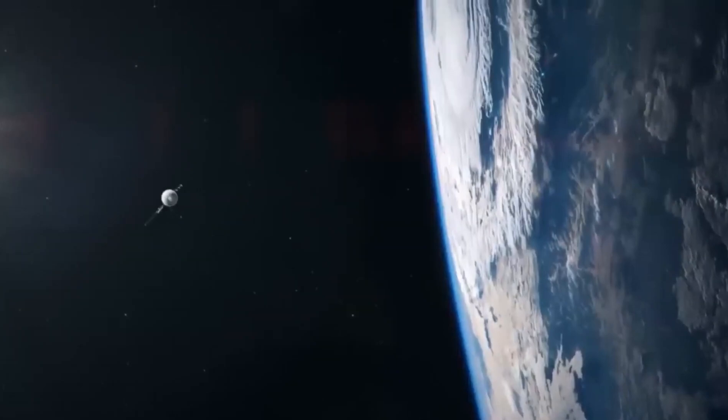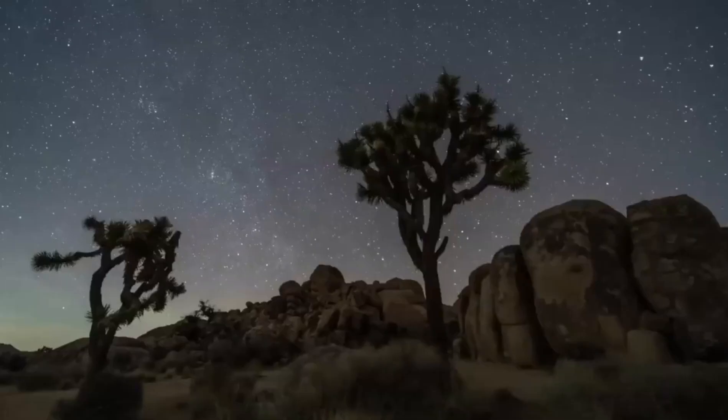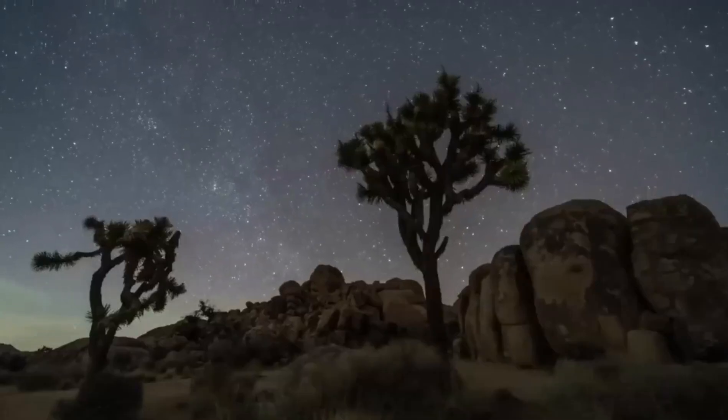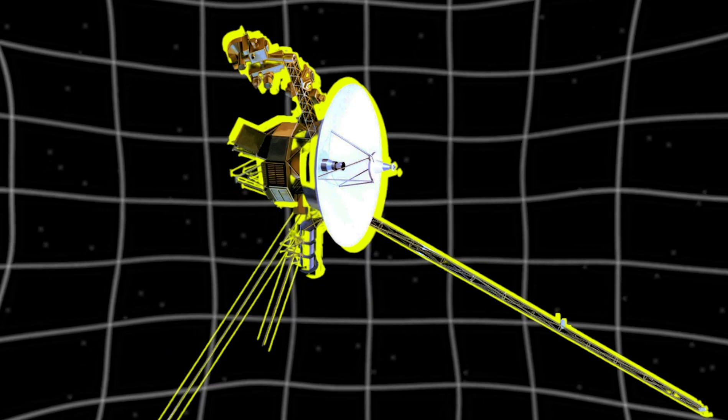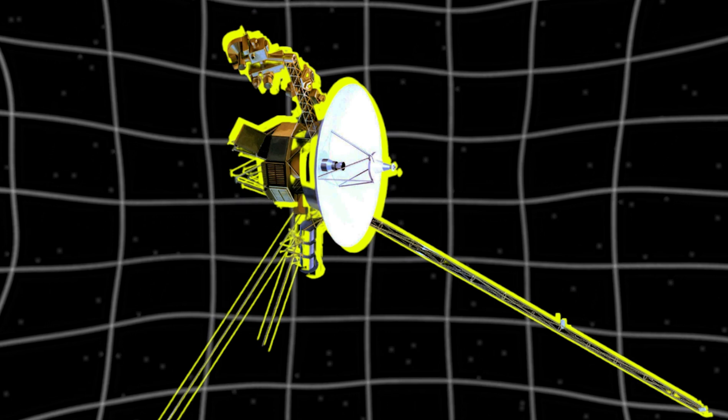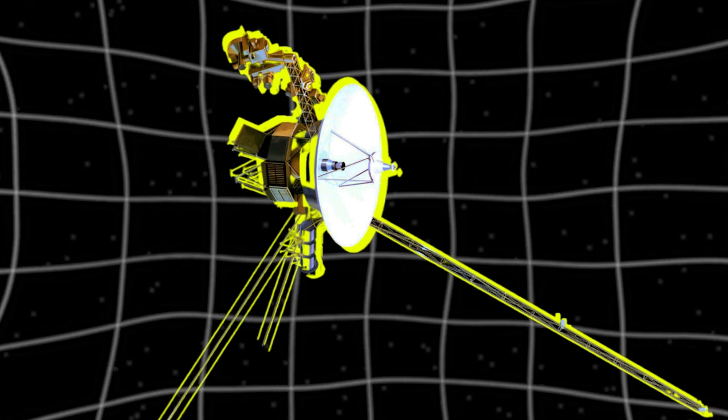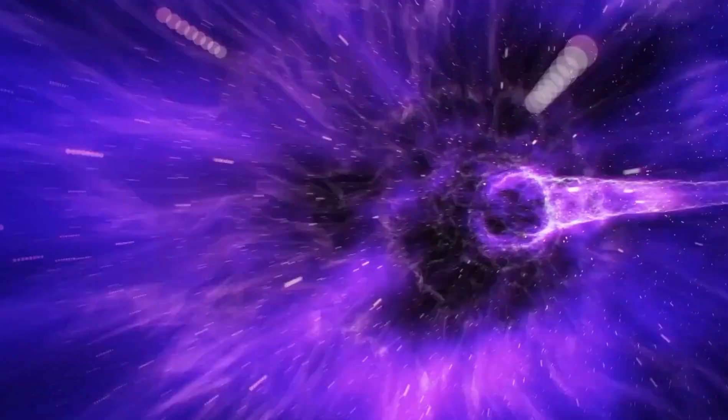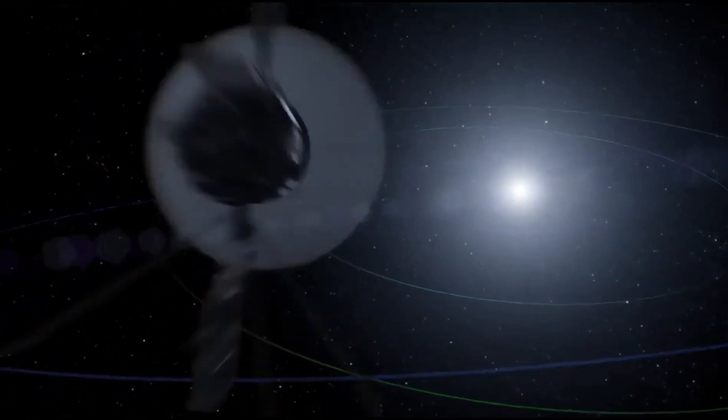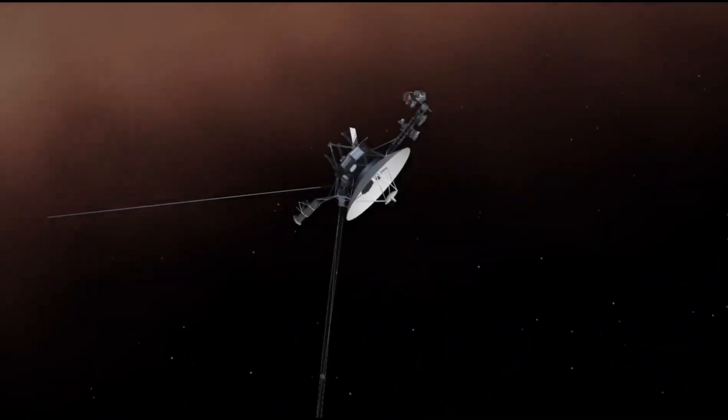On August 25, 2012, the spacecraft finally left the heliosphere and started the first spacecraft ever to measure the interstellar environment. According to NASA, Voyager 1 detected significant changes in the environment, including an increase in charged particles and cosmic rays in June 2012. As a result, Voyager 1 became the first spacecraft to enter interstellar space at a distance of 121 astronomical units from the sun, signaling the inner boundary of the heliosphere.